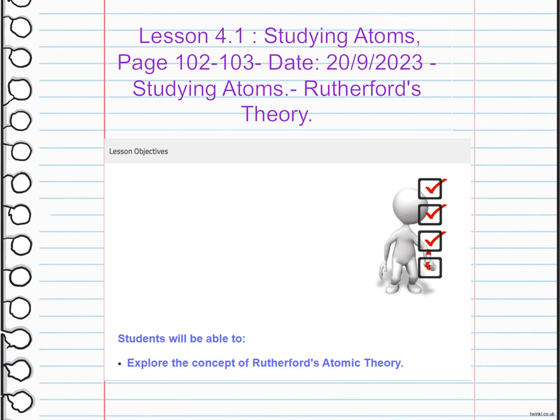From this, Rutherford concluded that atoms have a tiny, dense, positively charged nucleus at the center, surrounded by mostly empty space with negatively charged electrons orbiting around it. This model helped us understand atomic structure and laid the foundation for the modern understanding of the atom.